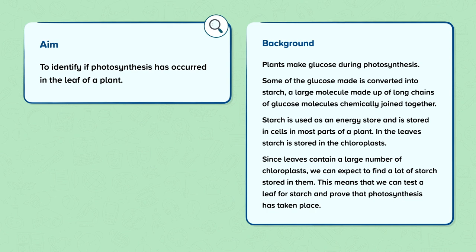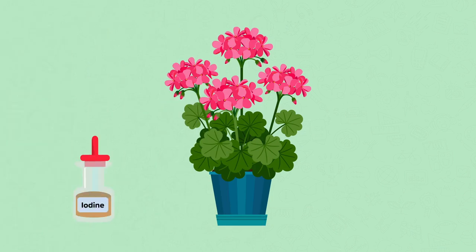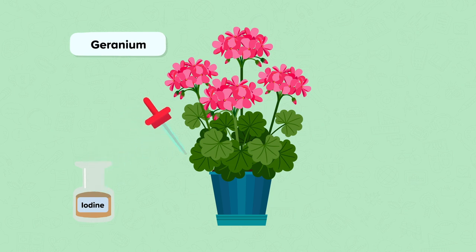This means that we can test a leaf for starch and prove that photosynthesis has taken place. A plant that is commonly used in schools is the geranium that is shown here. We use iodine solution to test for starch because in the presence of starch it turns from orange brown to a blue black colour. However, it won't work when placed directly on a leaf. A leaf needs to be specially prepared so that the iodine can reach the cells where the starch is stored.